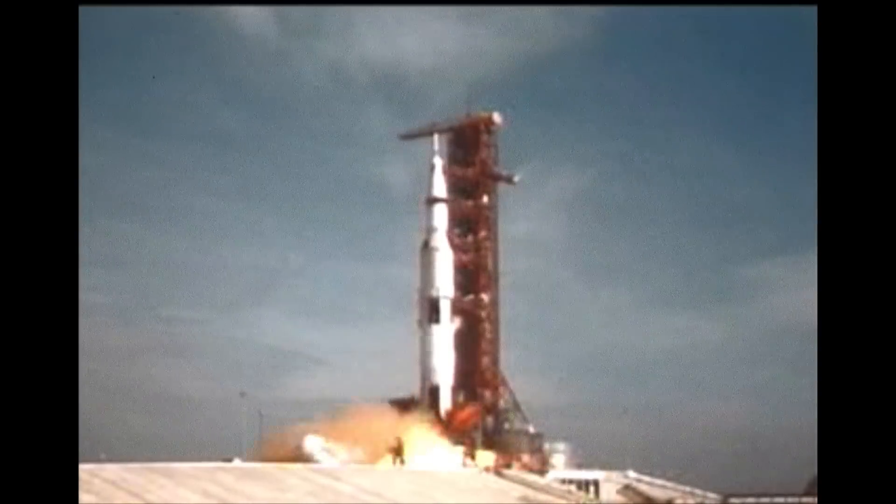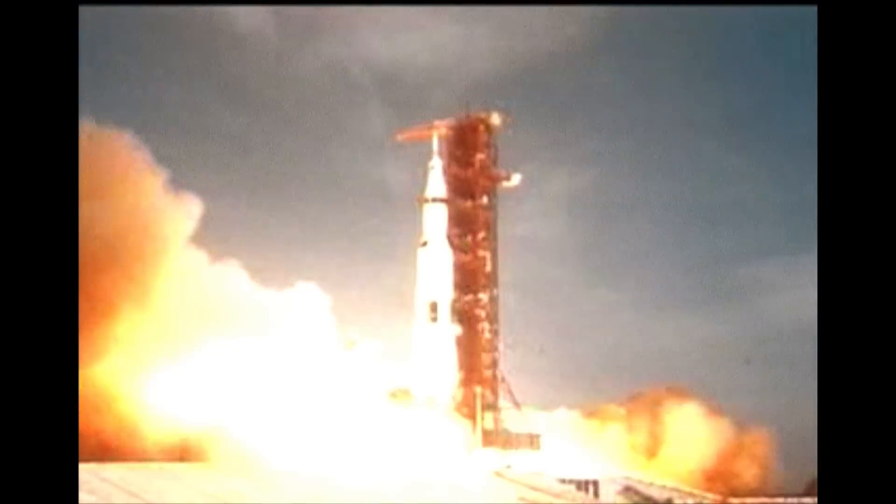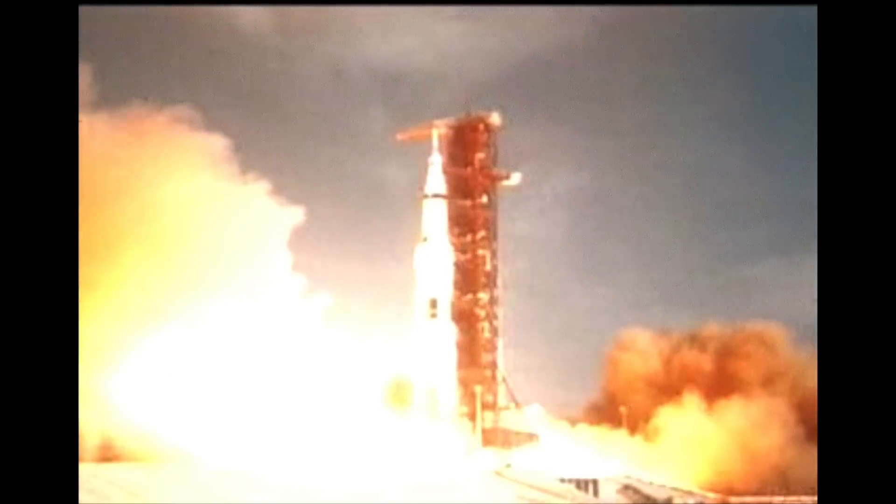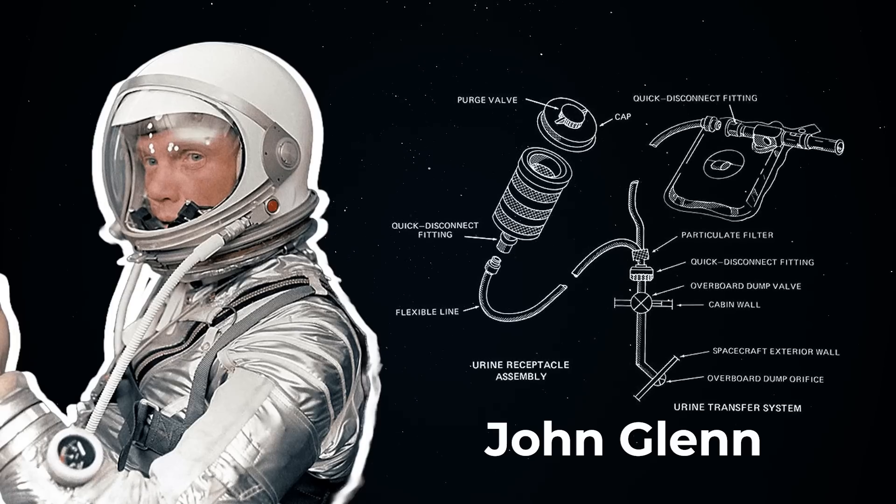This did mean that when it came time for longer duration orbital spaceflight, the very smart people at NASA were put to the task on an adequate waste collection system. John Glenn was the first American astronaut to complete a full orbit of the Earth, and along with him was sent the first apparatus to collect number one in space.